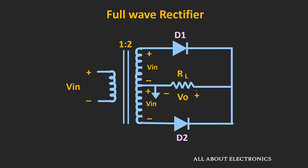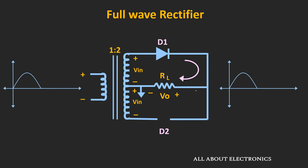So let's understand the working of this rectifier circuit. Whenever we apply a sine wave as an input, during the positive half cycle, diode D1 will conduct and diode D2 will remain reverse biased. The current will flow through this path. If we assume diode D1 as an ideal diode, then this Vin voltage will appear across this load resistance — that is, Vout is equal to Vin. So the same input voltage will also appear across this load resistance.